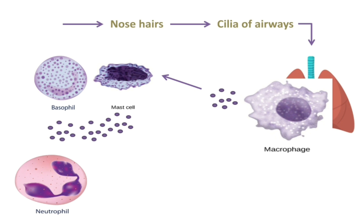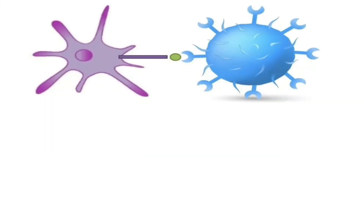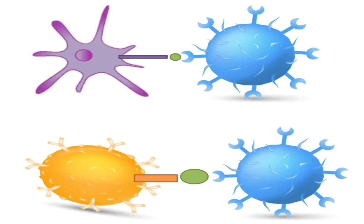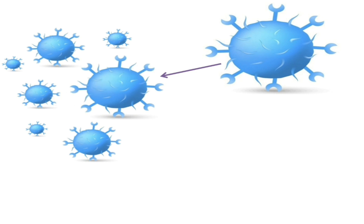Neutrophils in the blood move toward the site of infection and join the battle. If the pathogen is a virus, natural killer cells are also involved. At the same time, dendritic cells perform antigen presentation to T cells, and B cells do so as well. T cells divide many times and differentiate into T helper cells and T cytotoxic cells. T helper cells secrete cytokines that activate B cells, which then undergo clonal expansion.